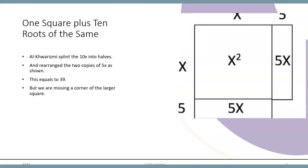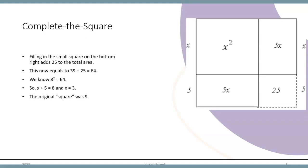Al-Khwarizmi's solution was to halve the 10x and rearrange two copies of 5x as shown in this diagram. This area still equals 39, but we are missing a square in the lower right corner. To complete this square, we can fill in the 25-unit corner in the lower right. Now the total area is 39 plus 25, or 64.